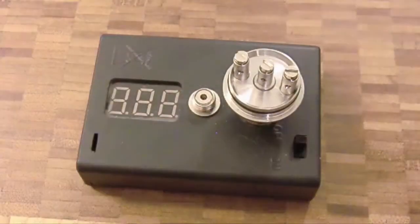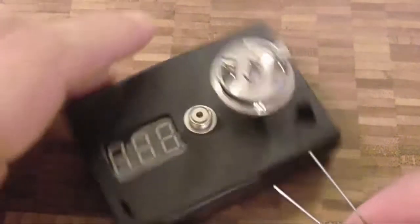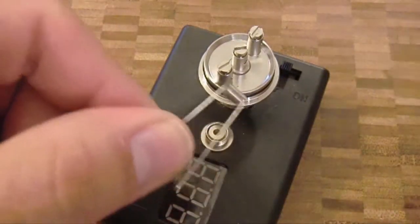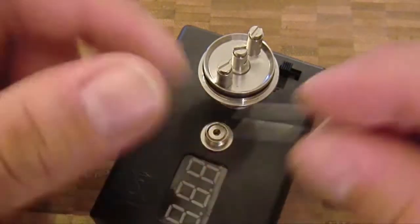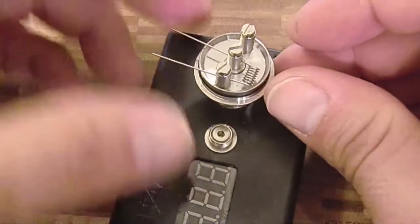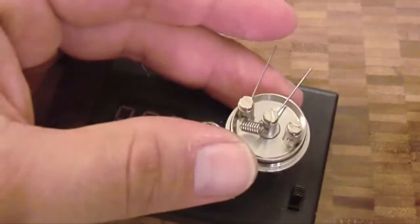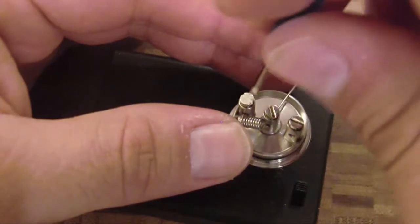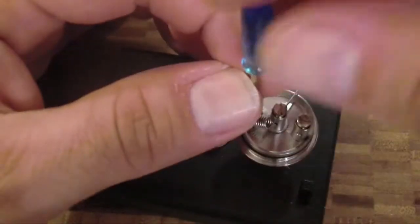Alright so I got it set up on the ohm reader here because that's the only place I can even use it, and we're going to use the coils that it came with. Two, obviously stick these in here. Lock that one down.